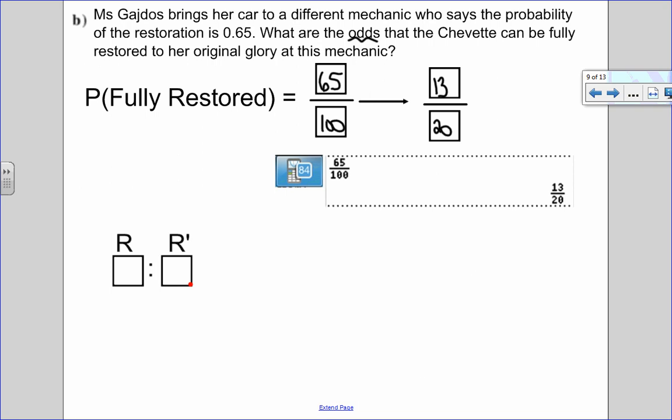Now I want to list this as odds. So I'm looking at restored to not restored. So I can see that there are 13 ways that it can be restored. Okay, now it's not going to be 13 to 20. 20 is the total and odds don't have a total. So if I have 13 ways of being fully restored, I would have seven ways of not being fully restored. Because 20 take away 13 is seven. So that would be my odds in favor of the restoration 13 to 7.